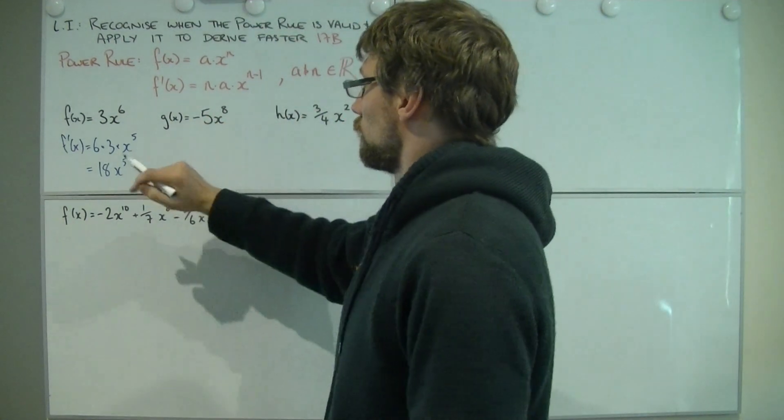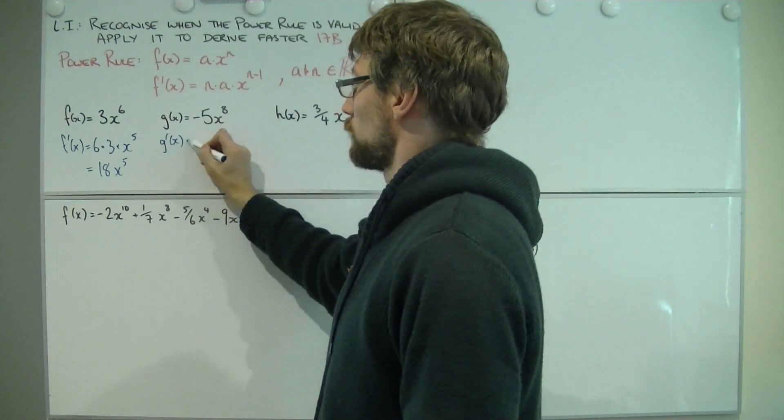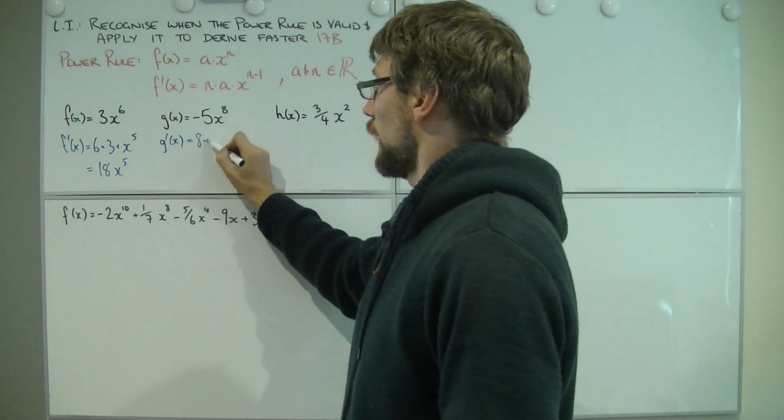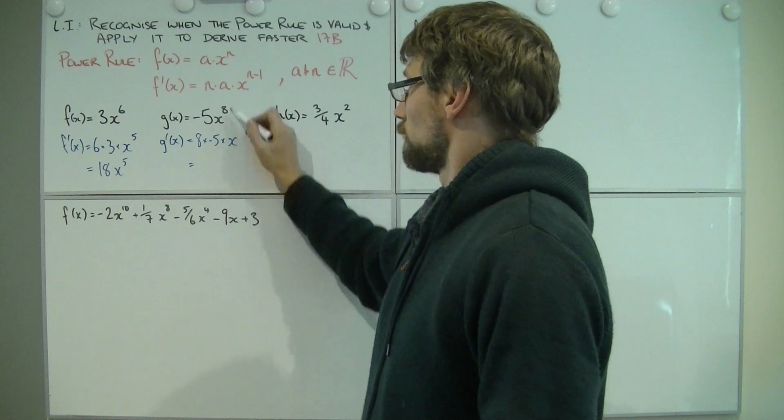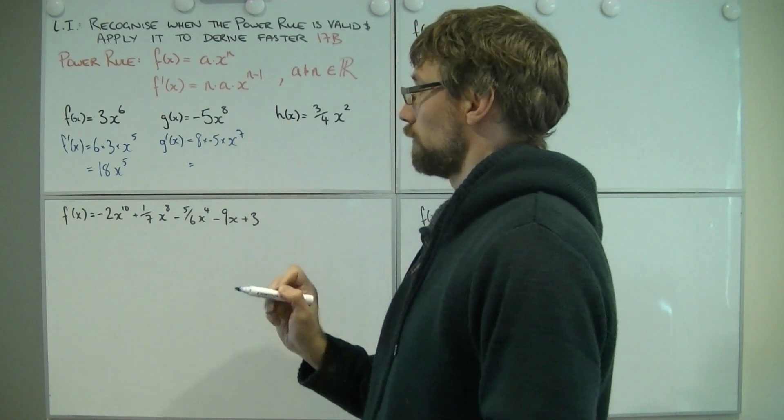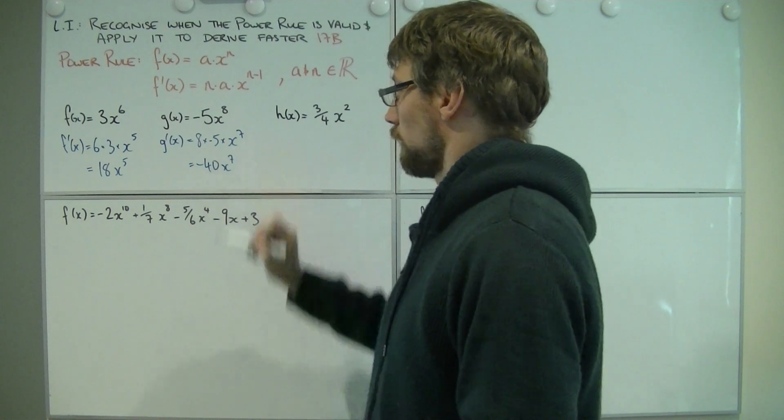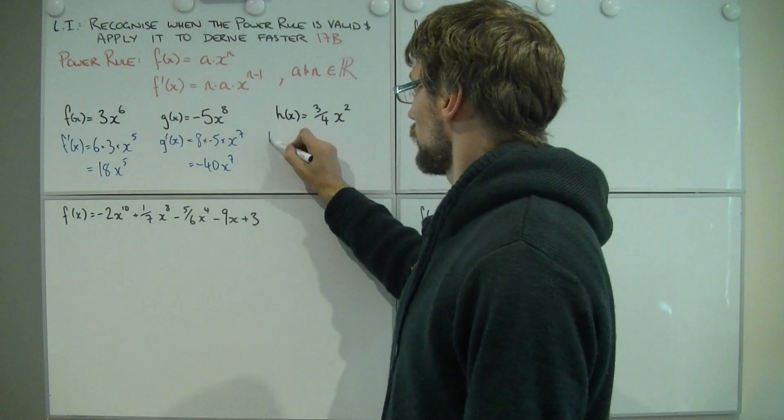Notice now I've got f, g, and h, so this is now g' because that's what I'm deriving. Bring the power down the front. So I've got 8 times negative 5 times x, and that comes down 1 power, so 7. Simplify - negative 40x to the 7. That easy. These become very tedious and boring very quickly.